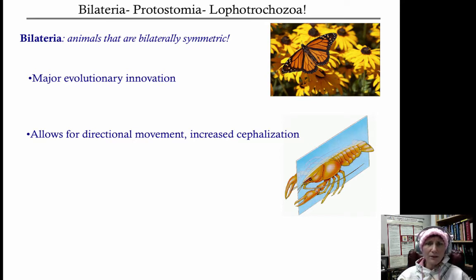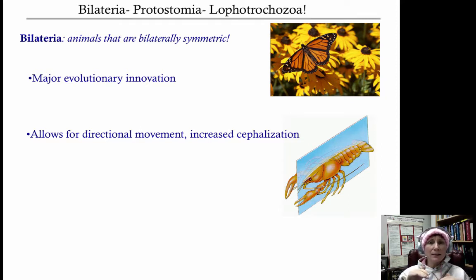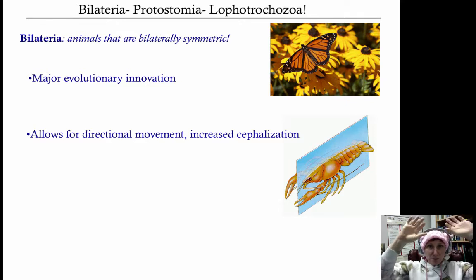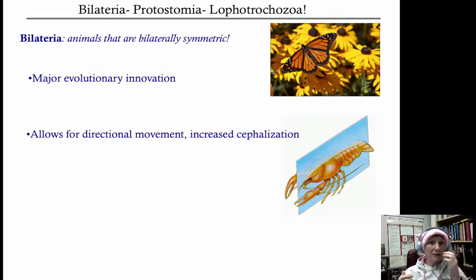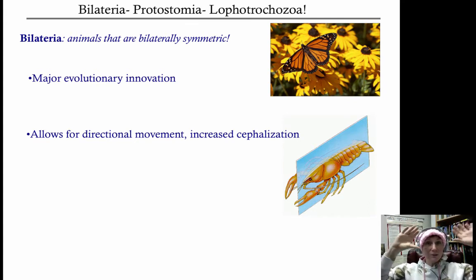Corresponding to increased bilateral symmetry, you usually have increased cephalization. You'll start seeing organisms with a higher level of complexity, though not all of them are complex. Most have increased sensory organs, and many of those are centralized toward the head region, which facilitates directed movement. If you're radially symmetric, you can't really direct your movement efficiently. But if you're cephalized with a head region and sense organs like light-sensing organs, you're much better able to direct where you're going.